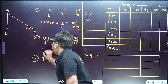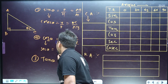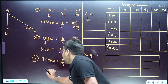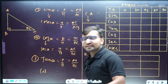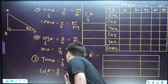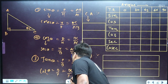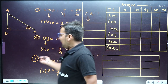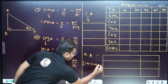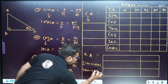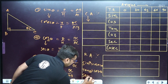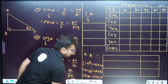Sec theta is the reciprocal of cos theta — it starts with 'S' — and equals hypotenuse by base, that is AC by BC. Similarly, cot theta is the reciprocal of tan theta — it starts with 'T' — and equals base by perpendicular, that is BC upon AB. The reciprocal pairs are: sine and cosec, tan and cot, and sec and cos.